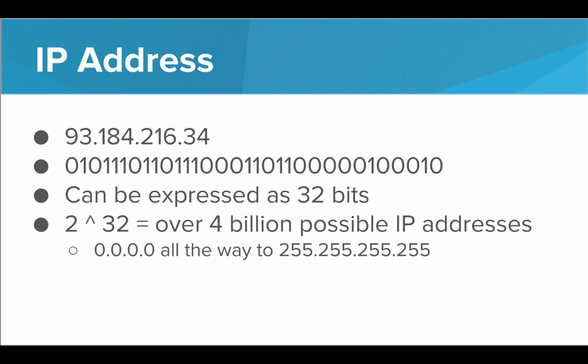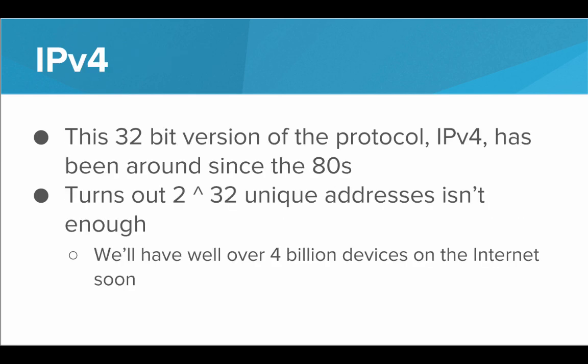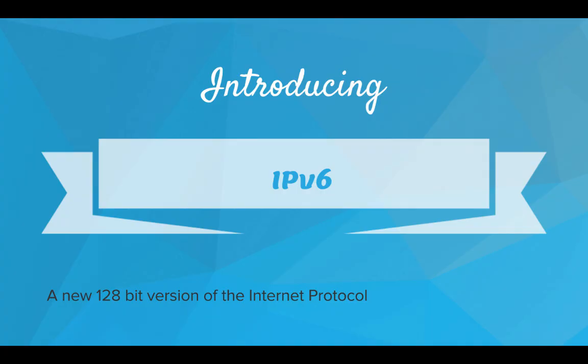You would think that over 4 billion possible IP addresses would be enough to cover every single device that would ever connect to the internet. But it turns out the internet got way more popular than anyone expected. So this system of IP addressing is actually a little outdated. This 32-bit version of the protocol is called IPv4, and IPv4 has been around since the 80s. Back in the 80s, 4 billion seemed like it would be enough. It turns out it's not — we will have well over 4 billion devices on the internet very soon. So what's the solution to this? How are we going to handle all of these new devices?